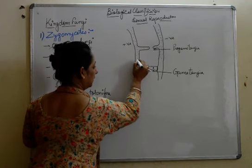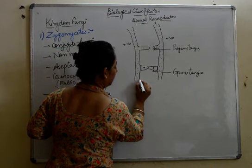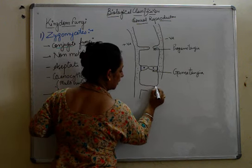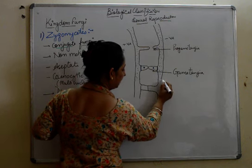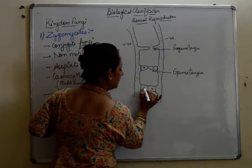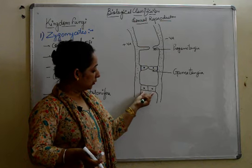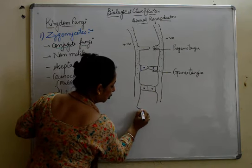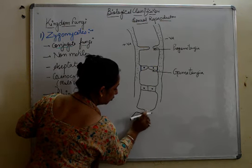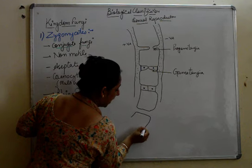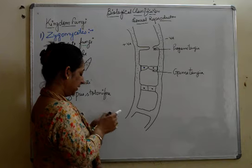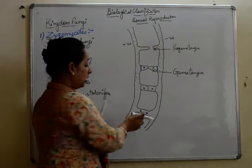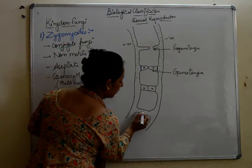After a while, these gametangia structures will start joining, giving us a structure where we have the positive and the negative strain with their nuclei present. There is still a separation at first, but finally these two nuclei are going to fuse. We now have a common hypha containing the male nucleus and the female nucleus, which will fuse to form a structure called the zygote.